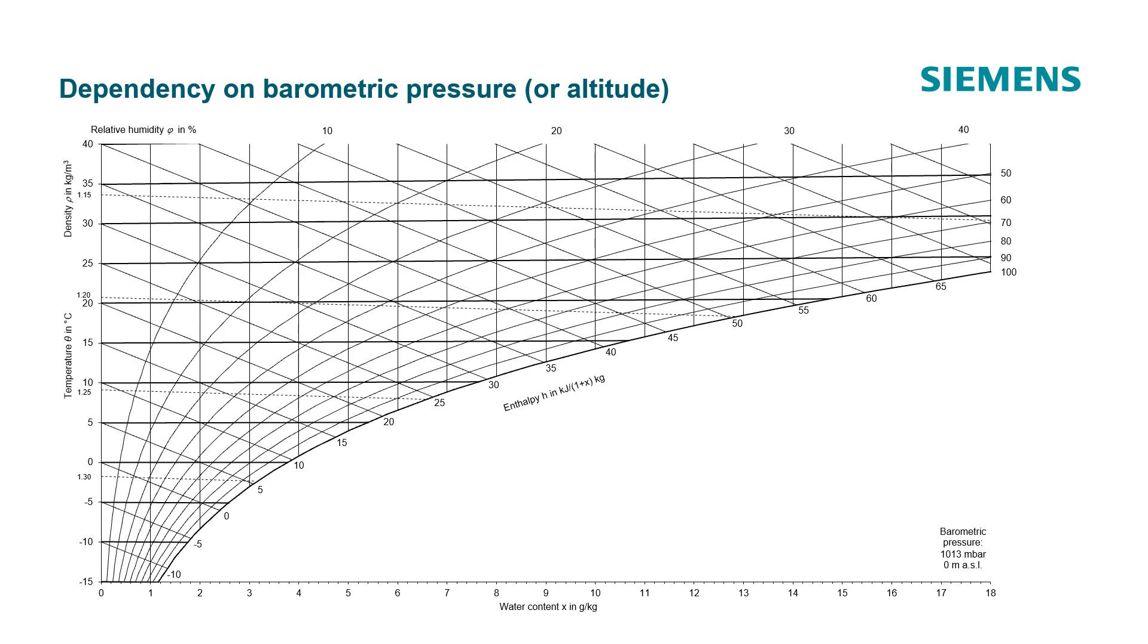Dependency on barometric pressure: The behavior of humid air is strongly dependent on the prevailing barometric pressure, respectively on the altitude. Therefore the indication of the used barometric pressure, respectively the altitude is essential. The diagram shown is defined for a barometric pressure of 1013 millibar, which corresponds to an average barometric pressure at sea level.